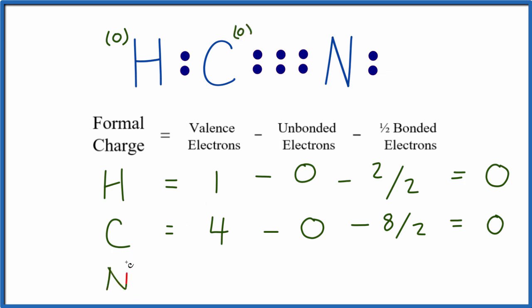For the nitrogen, nitrogen is group 15, sometimes called 5A. We have two unbonded electrons - they're just out there by themselves.